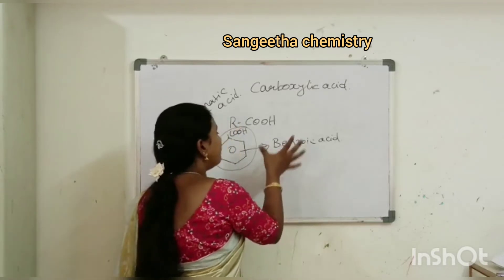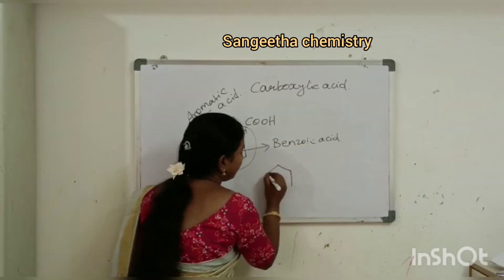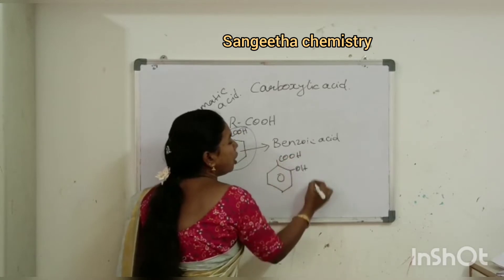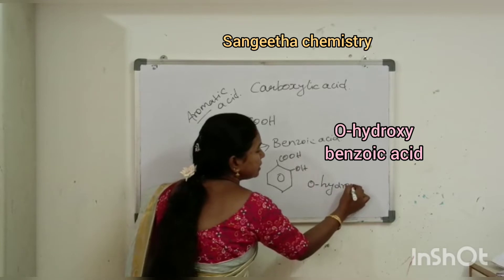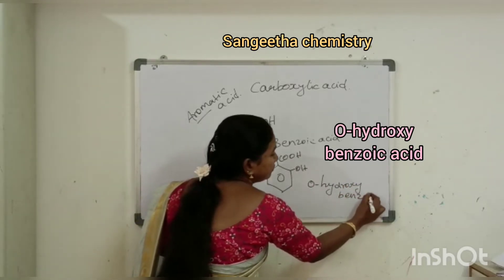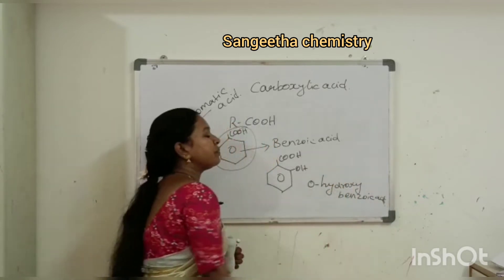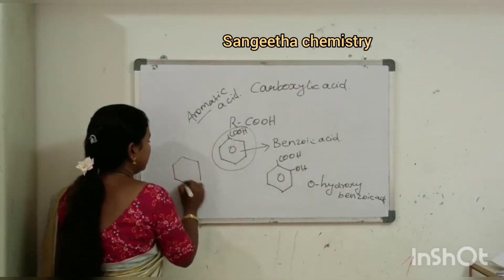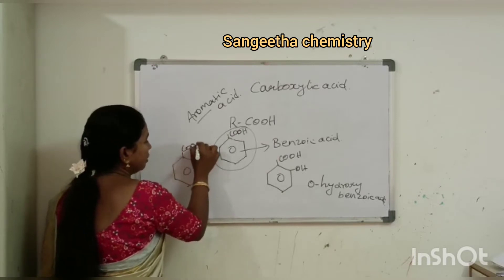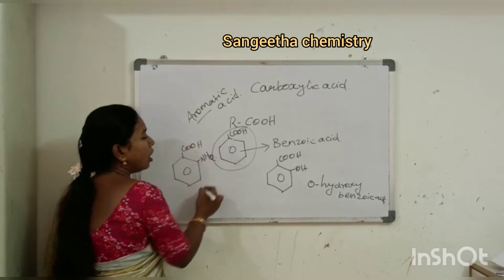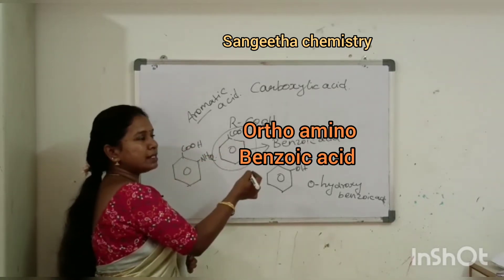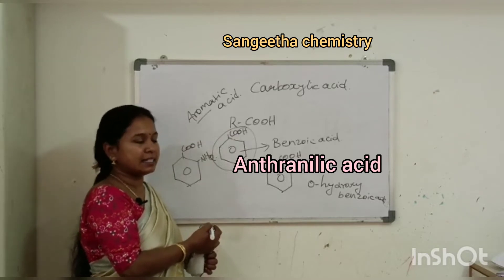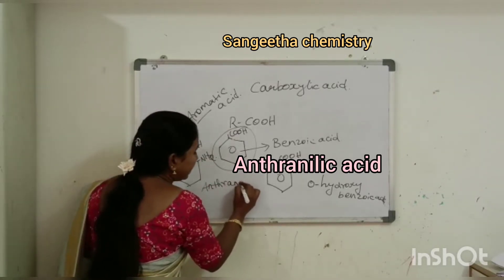Examples include benzoic acid, and ortho-hydroxybenzoic acid. When an NH2 amino group is in the ortho position, it is called ortho-aminobenzoic acid, which is also known as anthranilic acid.